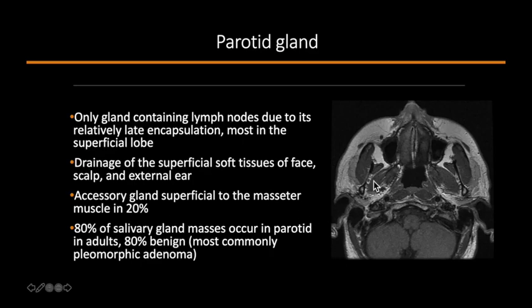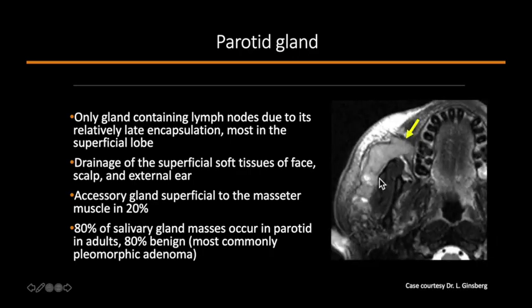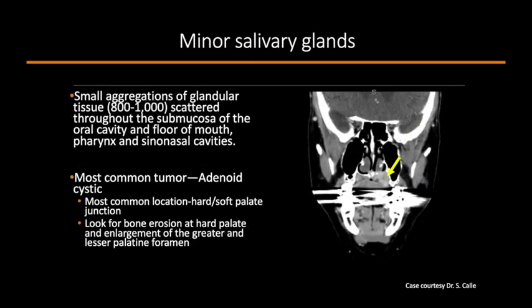The accessory gland is present overlying the masseter muscle in approximately 20% of patients. Roughly 80% of salivary gland masses occur in the parotid gland in adults, and 80% of these are benign, most commonly pleomorphic adenoma. Minor salivary glands are approximately 800 to 1,000 clusters scattered throughout the submucosa of the upper aerodigestive tract, including the oral cavity, floor of mouth, pharynx, and sinonasal cavities — the anterior hard palate and gingiva tend to lack minor salivary glands. The most common tumor of the minor salivary glands is adenoid cystic carcinoma, most commonly located at the junction of the hard and soft palate.